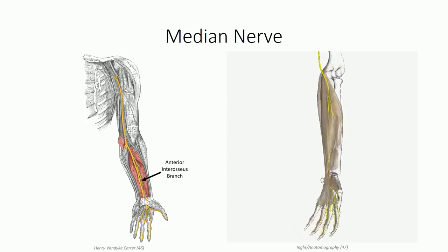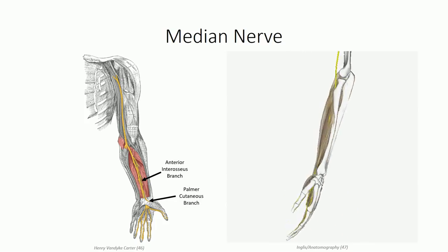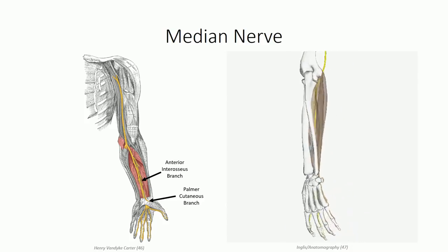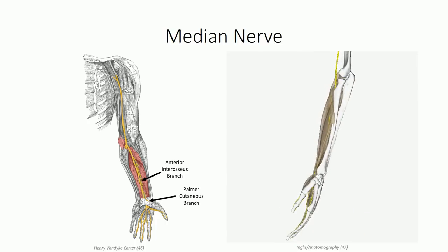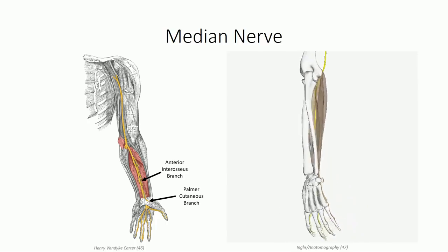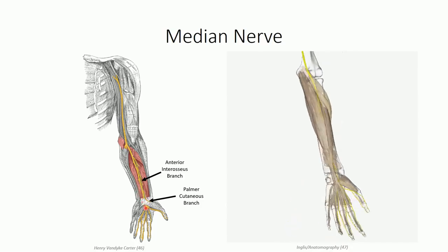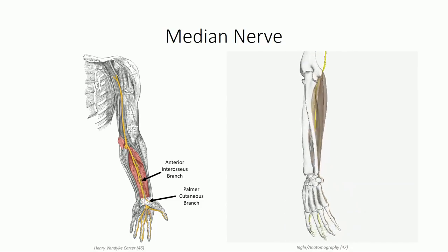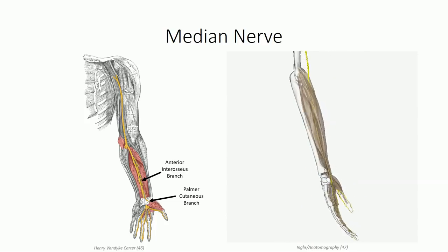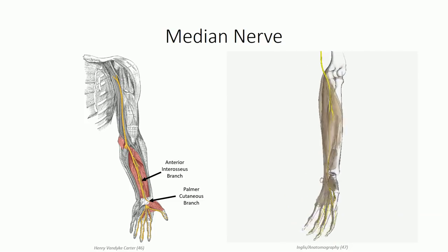In the distal region of the forearm, the main branch gives off the palmar cutaneous branch, which courses through the superficial palmar fascia, providing cutaneous innervation to the lateral palmar surface of the hand. The main branch then passes through the carpal tunnel between the flexor digitorum superficialis and flexor pollicis longus tendons to enter the hand, where it provides motor branches to a number of important muscles in the lateral aspect of the hand and sensory nerve branches to the anterior lateral surface of the hand as well.